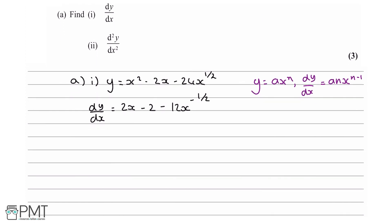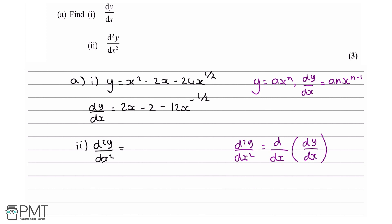Now let's do d squared y by dx squared. To find d squared y by dx squared, we differentiate dy by dx with respect to x. The derivative of 2x is 2, the derivative of minus 2 is 0, and the derivative of minus 12x to the minus half is positive 6x to the minus 3 over 2. There are three marks available: the first two come from correctly differentiating y to get dy by dx, and the third from correctly differentiating dy by dx to get d squared y by dx squared.